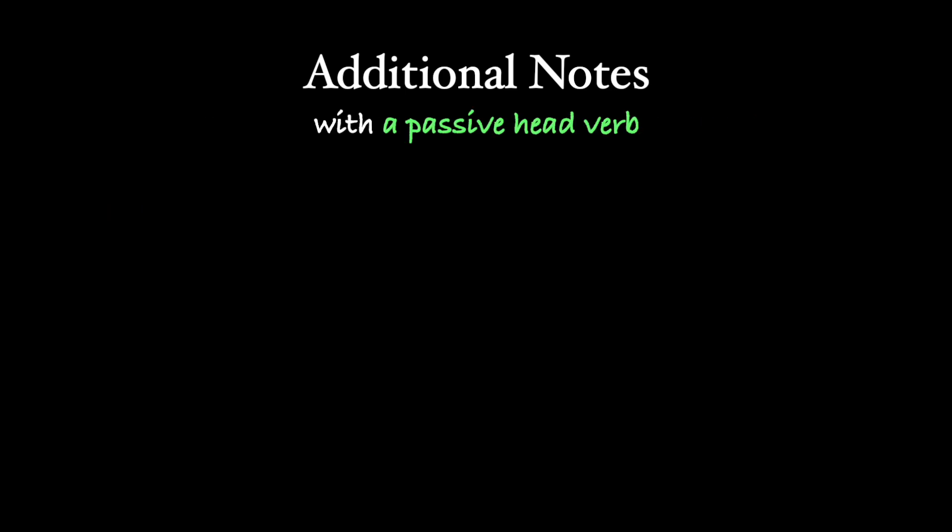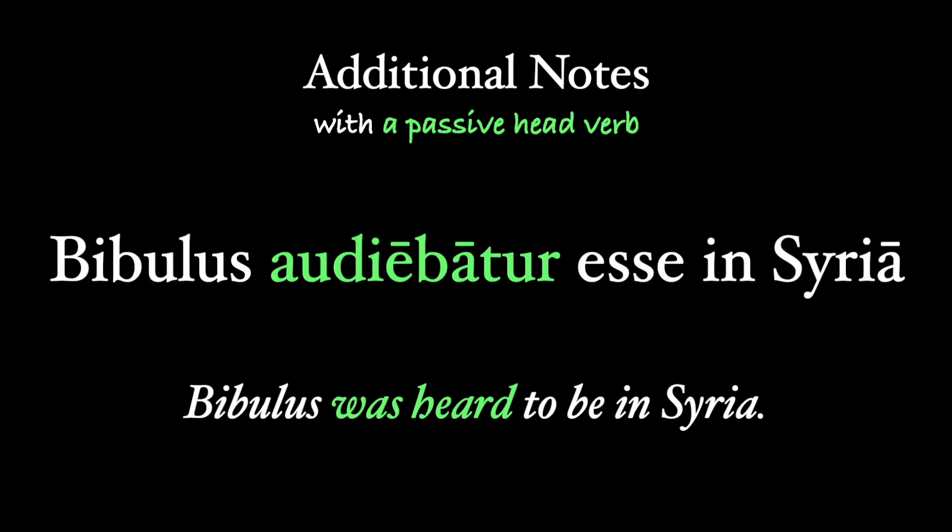You can also find the head verb in the passive voice; in this case, what would be the subject accusative often becomes the subject of that passive head verb. For example, "Bibulus audiebatur esse in Syria" — Bibulus was heard to be in Syria — where Bibulus is the subject of the passive head verb audiebatur. This is used instead of saying "it was heard that Bibulum was in Syria," with bibulum as the subject accusative.